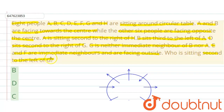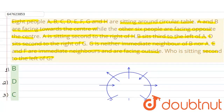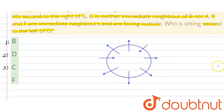And our options are: 1st - B, 2nd - D, 3rd - C, and 4th - F.